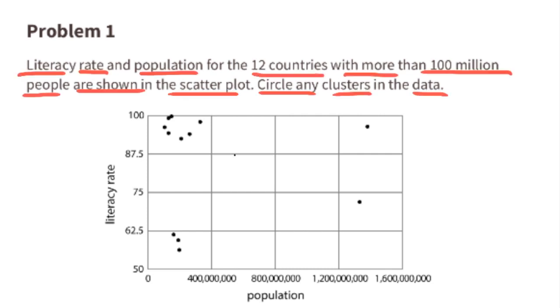Problem number one. Literacy rate and population for the 12 countries with more than 100 million people are shown in the scatter plot. Circle any clusters in the data. Both of these groups of points are considered clusters in the data.